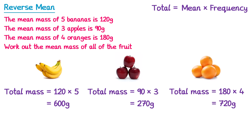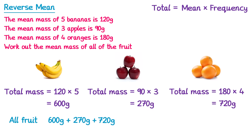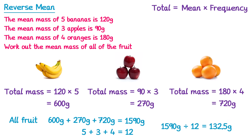Now we're ready to work out the mean of all of the fruit. We can work out the total mass by adding together the three masses: 600 plus 270 plus 720 gives a total mass of 1590. All we need to do now is divide this by how many pieces of fruit there are — 5 bananas, 3 apples, and 4 oranges gives a total of 12 pieces. So we divide the total mass, 1590, by 12, which gives you 132.5 grams.